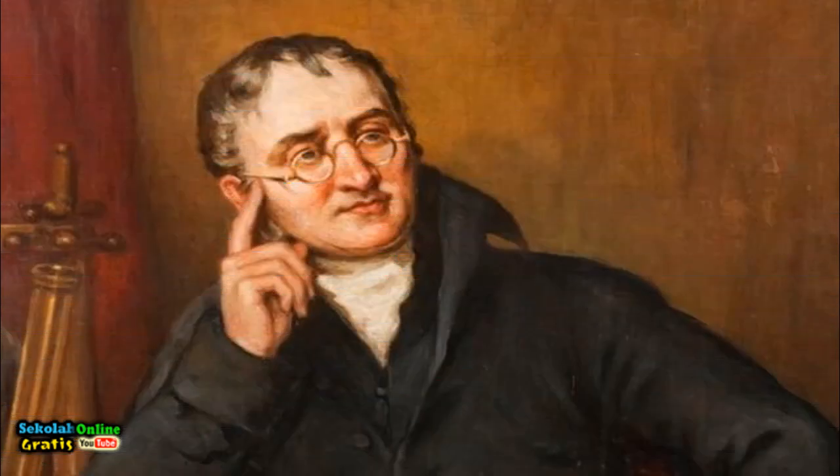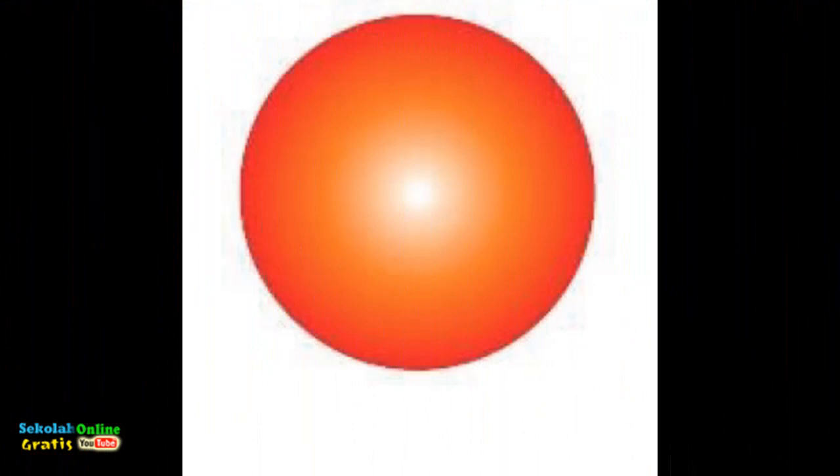John Dalton said that the atom is a solid sphere and is the smallest indivisible part. Each element consists of identical atoms. Atoms of different elements have different atoms. Atoms can combine in certain proportions to form compounds. Joseph John Thompson said that the atom is a positively charged sphere and in certain places there are negatively charged electrons like raisins in bread.